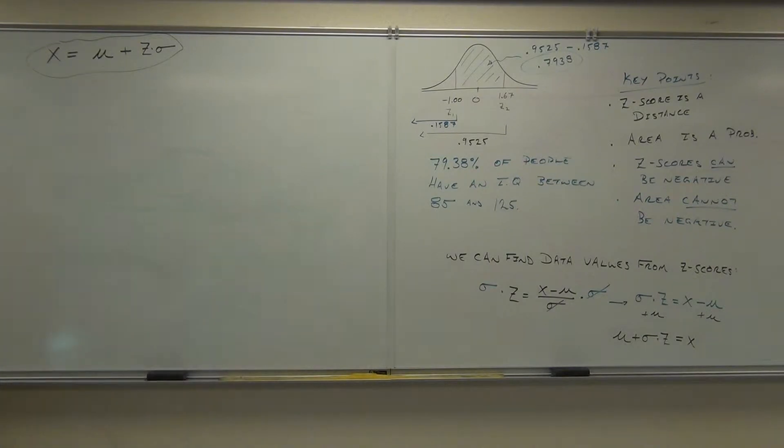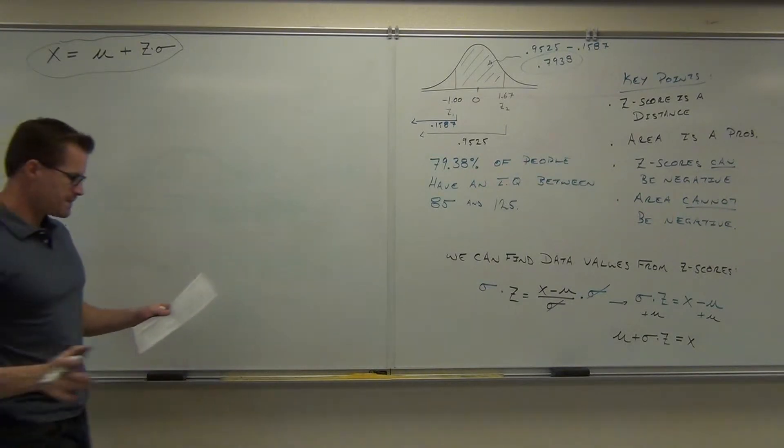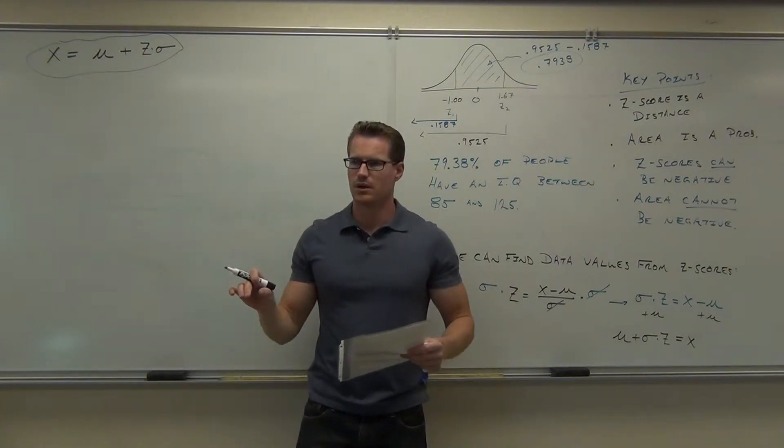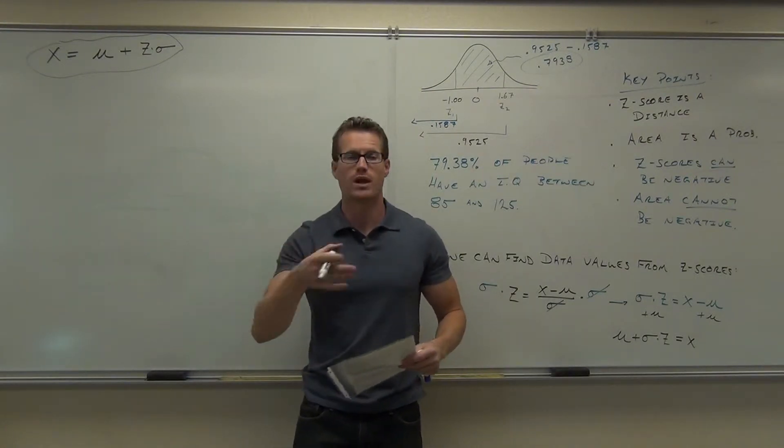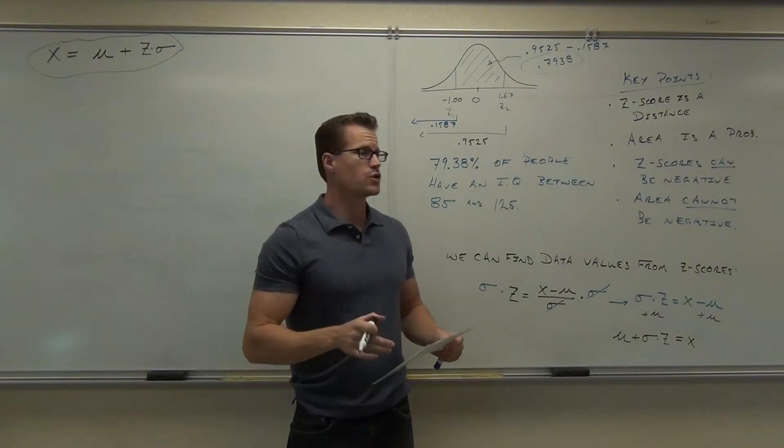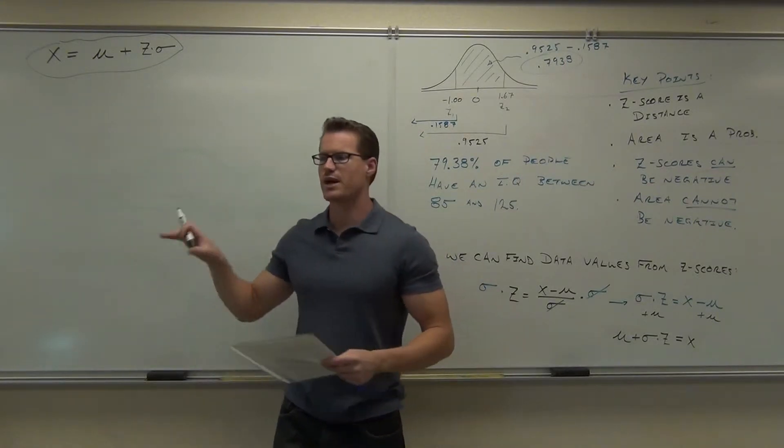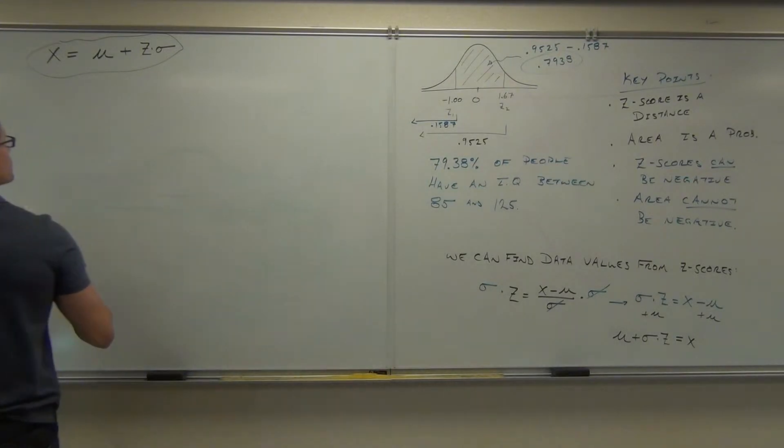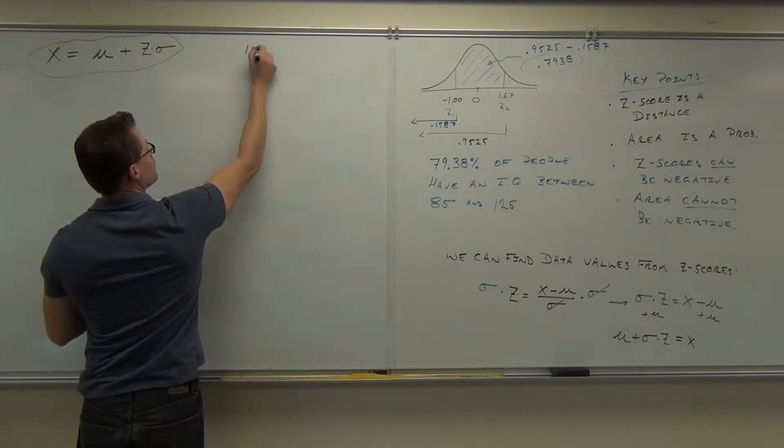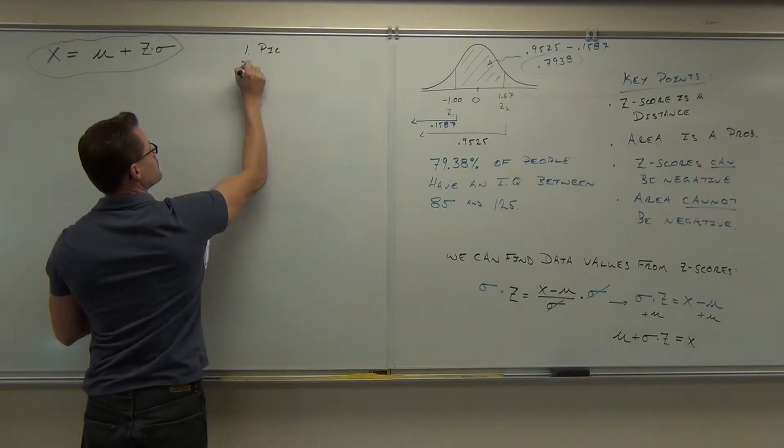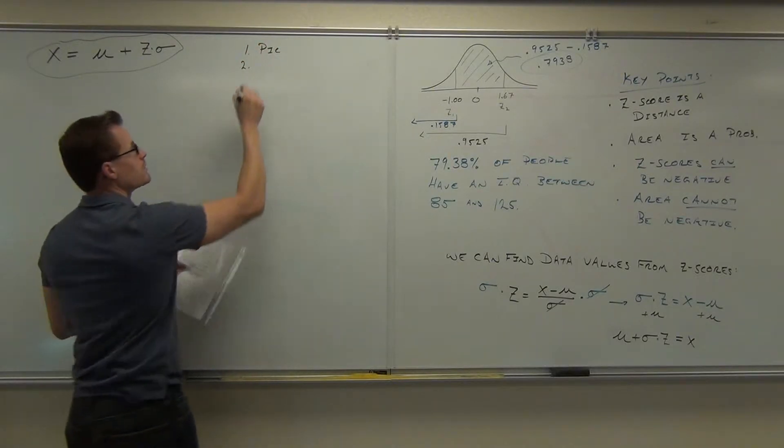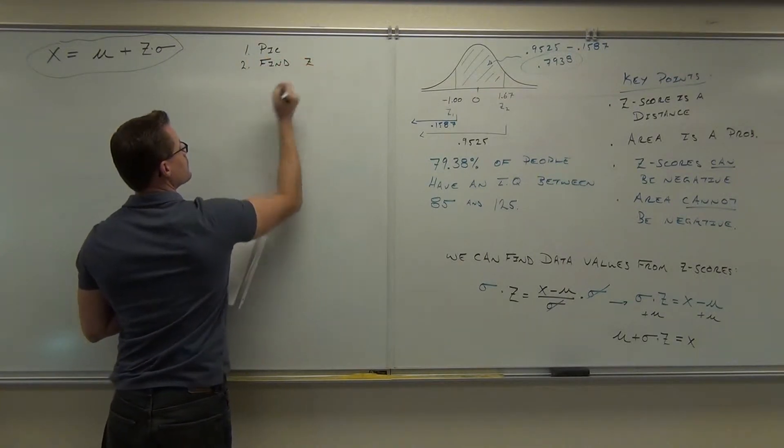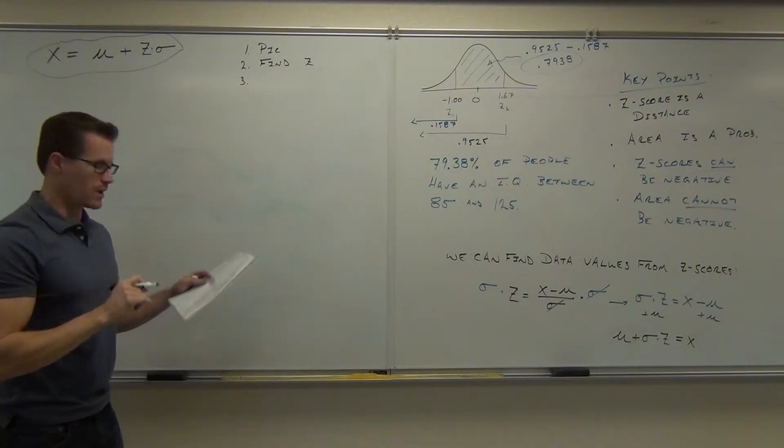Same steps really, we're going to do a sketch, only this time we're working a little bit backwards, we're going to draw a picture here, identifying the top or the bottom, whatever percent that I'm giving you, you'll use that to find a z-score, you'll use that z-score to translate that into a data value. So steps again are: picture, find a z-score, use that to solve for x.